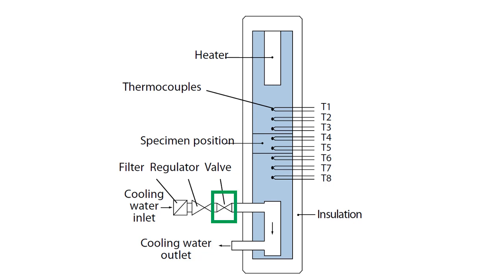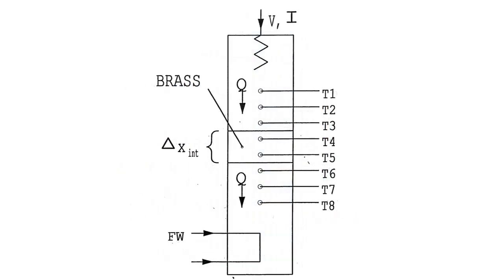A controlled valve allows the flow of cooling water to be varied. Take special notes of temperatures T4 and T5 since you will be using this to calculate thermal conductivity for the materials of the specimens.